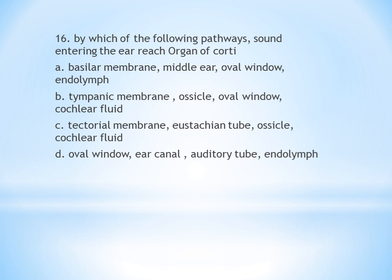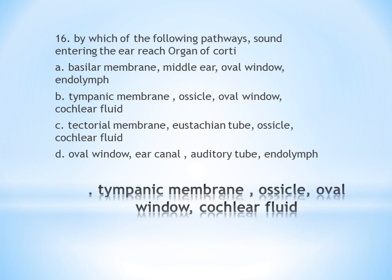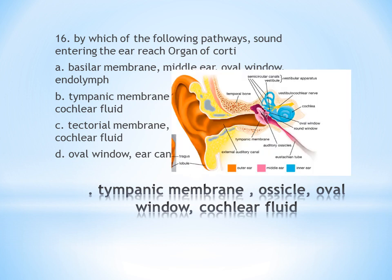By which pathway does sound entering the ear reach the organ of Corti? A. Basilar membrane, middle ear, oval window, endolymph. B. Tympanic membrane, ear ossicles, oval window, cochlear fluid. C. Tectorial membrane, Eustachian tube, ossicles, cochlear fluid. D. Oval window, ear canal, auditory tube, endolymph. The answer is B — tympanic membrane (eardrum), then ear ossicles, oval window, and cochlear fluid, thereby reaching the organ of Corti.